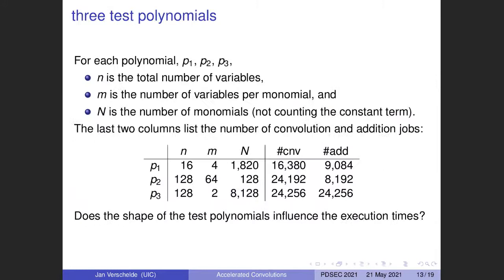Now let's look at the computational results. We have two main parameters: the length of the polynomial N, and the number of variables per monomial. We test three polynomials, listing the number of convolution jobs and addition jobs for each. The first polynomial was generated to have at least a trillion floating point operations. The second polynomial has more variables per monomial relative to the number of monomials — it is more convolution heavy. The third polynomial is very sparse with at most two variables per monomial, giving many more additions.